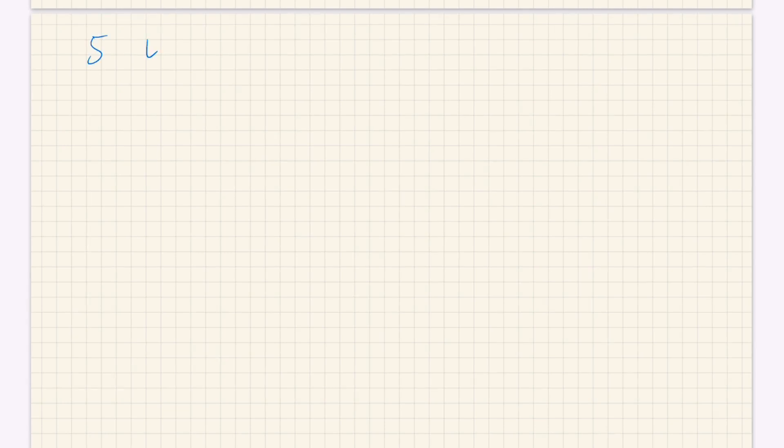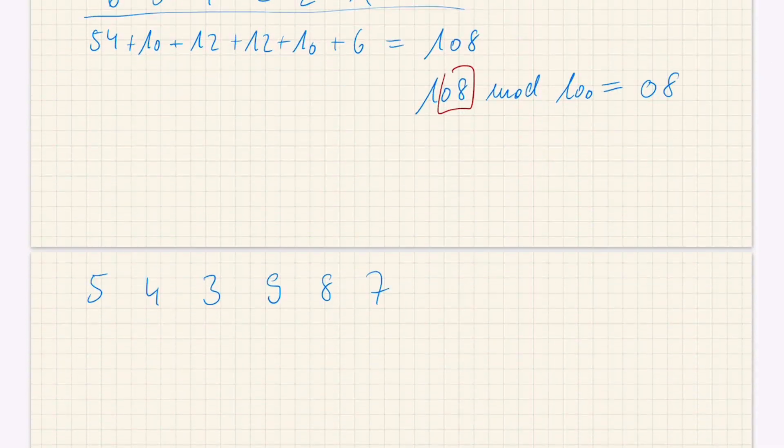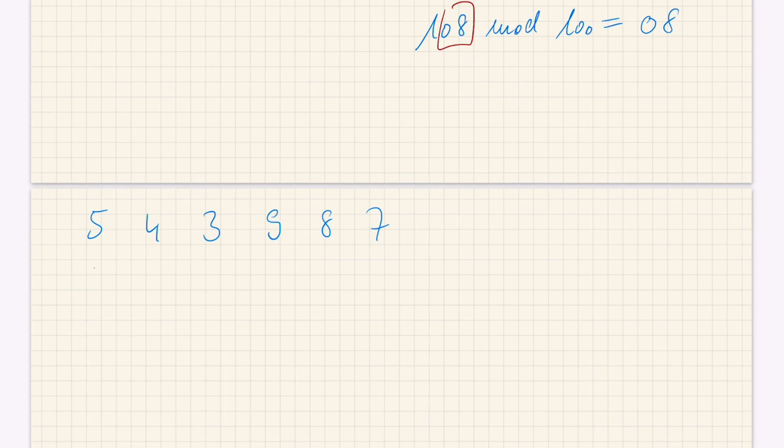Next example: 543987. Just double check. And we have the same weights as before: 6, 5, 4, 3, 2, 1.